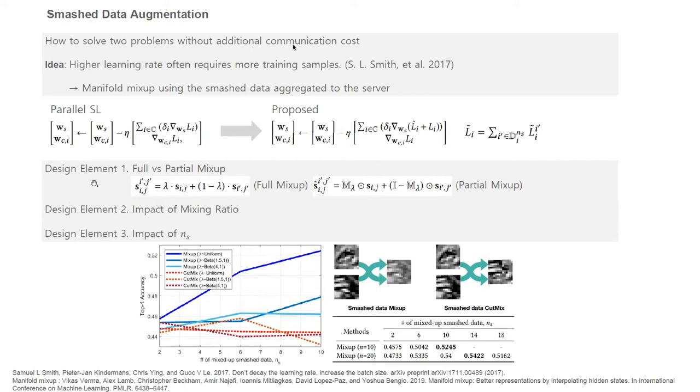There are three design elements in this SMASH data mix-up: the type of data augmentation techniques, mixing ratio, and the number of mixed-up SMASH data. In summary, as shown in figure below, mix-up with uniform lambda performs best. Regarding N_s, the table below shows that accuracy is not always an incremental function for N_s. The optimal N_s according to N is left as future work.